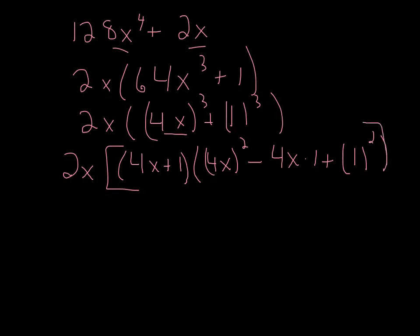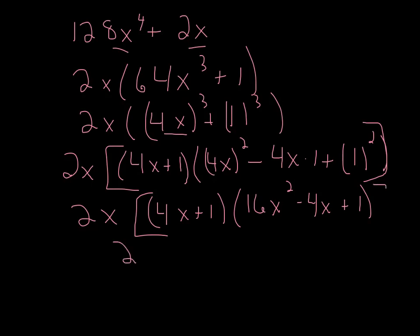Let's go ahead and do some math here and keep that 2x on the outside. So we've got 4x plus 1, 4x squared is going to leave me with 16x squared, minus 4x plus 1. So we've got 2x times the quantity 4x plus 1, times the quantity 16x squared, minus 4x plus 1. All factored, and there's cubics.